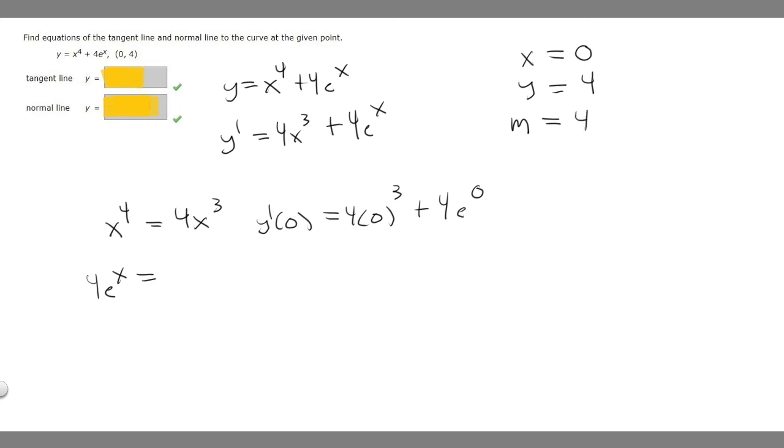Now we can plug all these values into our point-slope formula. So y minus y1 equals m times x minus x1. y1 and x1 are our y and x coordinates. So y minus our y coordinate, which is 4, equals our slope, which is 4, times x minus our x coordinate, which is 0.